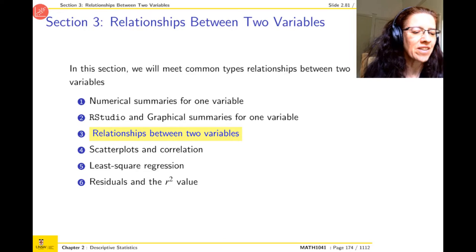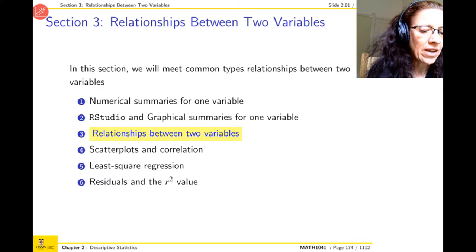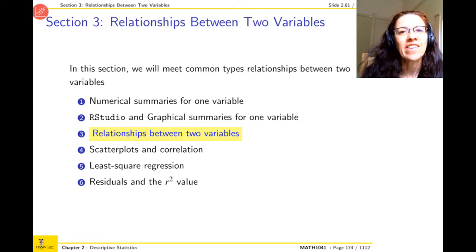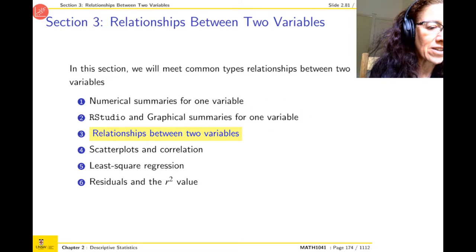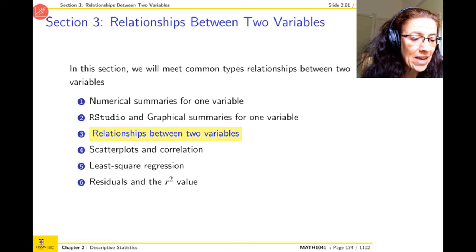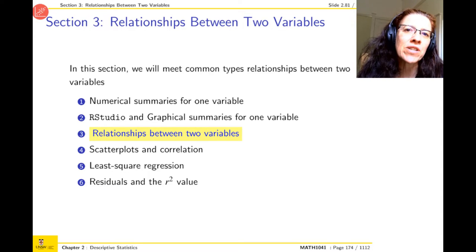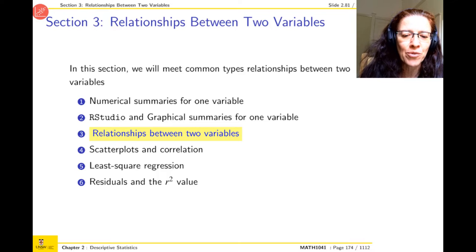In our previous section we dealt with numerical summary for one variable and graphical summary for one variable. That very naturally raises the question: what about two? We would like to do the same to describe the relationship both using numbers — our numerical summaries — and also using graphs, our graphical summaries.